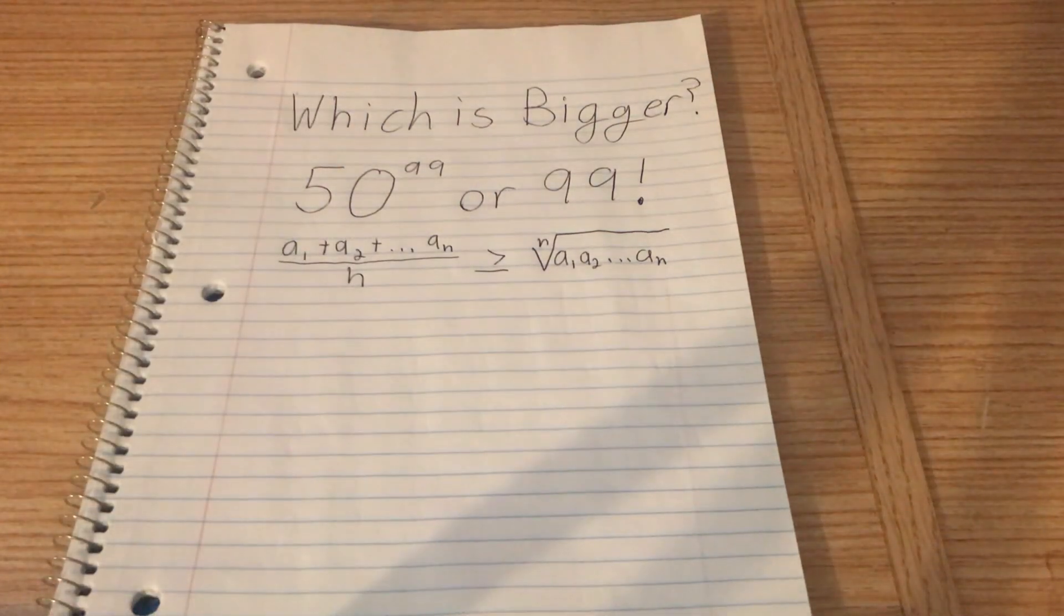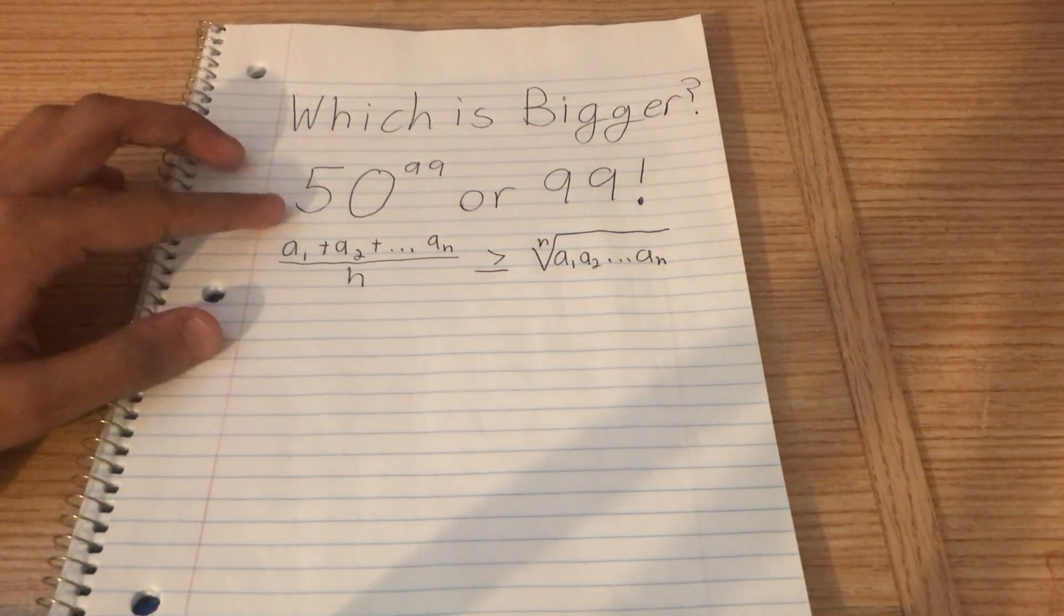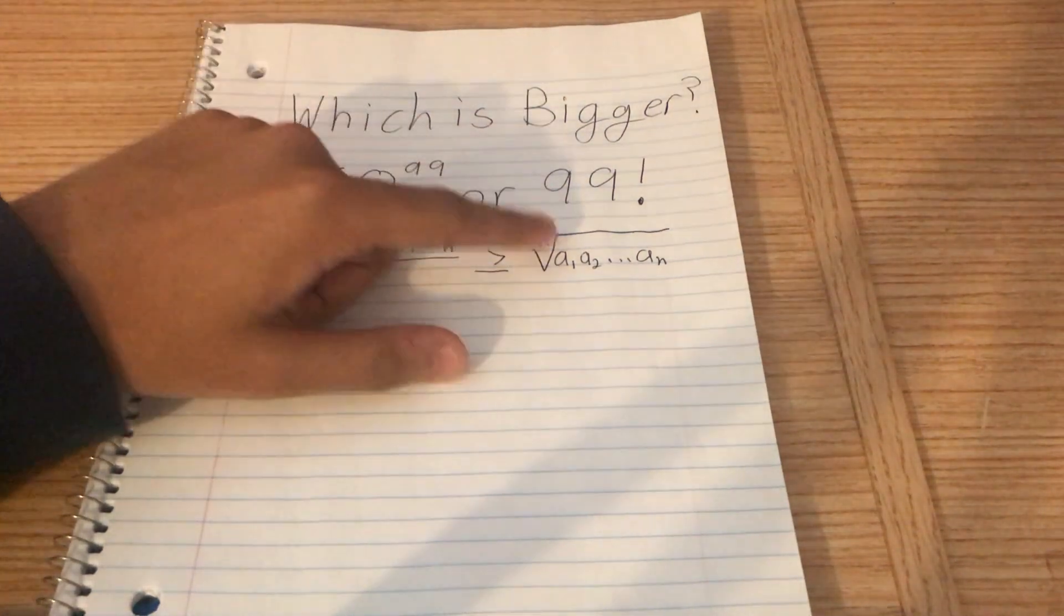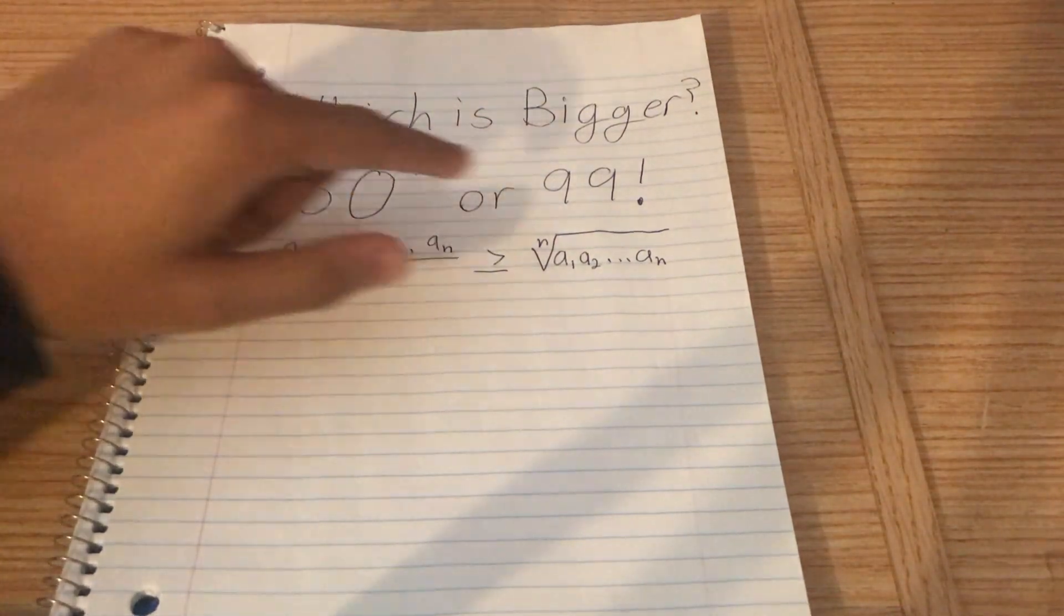Hello everyone. A math YouTuber by the name of Michael Penn recently made a video where he discussed how to find out which value is bigger, 50 to the power of 99 or 99 factorial.